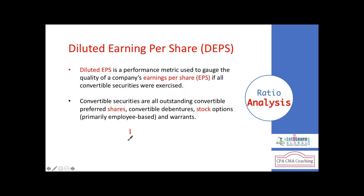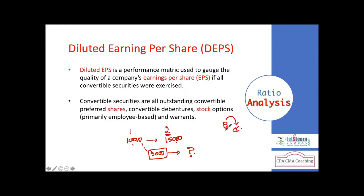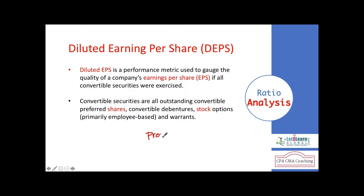Now the question is: how do we calculate the weighted average number of shares? Whether the five thousand new shares were issued for cash, or preference shareholders converted to common shares, or debenture/bond holders converted to common shares, or stock options/warrants given to employees — we need to use a prorata basis when shares are issued during the year on different dates.